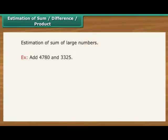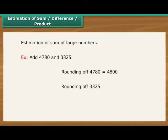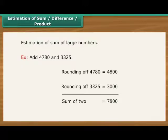Estimation of sum, difference, product. Estimation to nearest number can help in the estimation of the sum of two large numbers. For example, add 4,780 and 3,325. Rounding of 4,780 would make it 4,800. Rounding of 3,325 would make it 3,000. Sum of the two, 7,800.